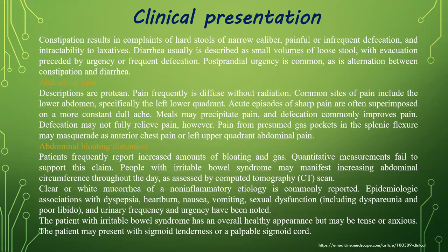Abdominal pain descriptions are protean. Pain is frequently diffuse without radiation. Common sites include the lower abdomen, especially the left lower quadrant. Acute episodes of sharp pain are often superimposed on a more constant dull ache. Eating may precipitate pain, and defecation commonly improves it, though patients may not find full relief. Pain from presumed gas pockets in the splenic flexure may masquerade as anterior chest pain or left upper quadrant abdominal pain. Patients frequently report increased amounts of bloating and gas, though quantity measurements fail to support this claim. Patients with IBS may manifest increasing abdominal circumference through the day.